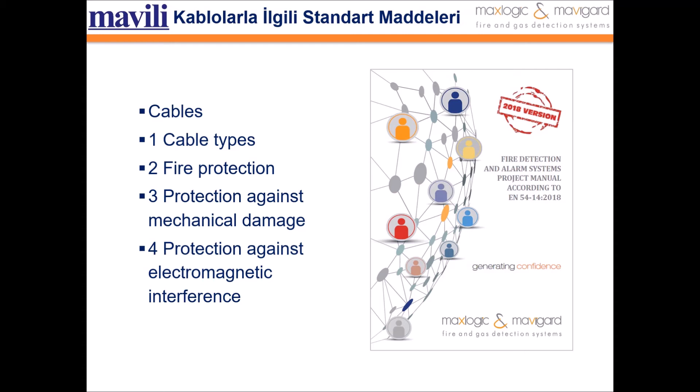Protection against mechanical damages. Cables must be adequately shielded. Cables can be attached to cable tray channels, etc. If installed, they must be separated from other cables. They should not be installed in the same tray with low voltage cables. If there is only one tray for extra low voltage and low voltage cables, they must be separated from the low voltage cables by a metal physical barrier.